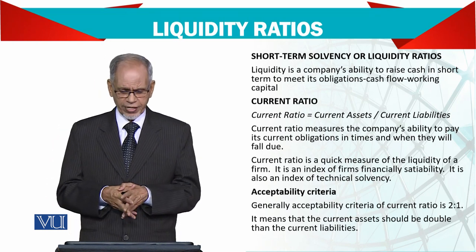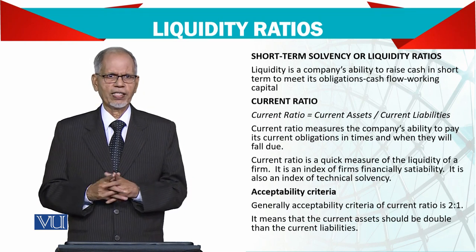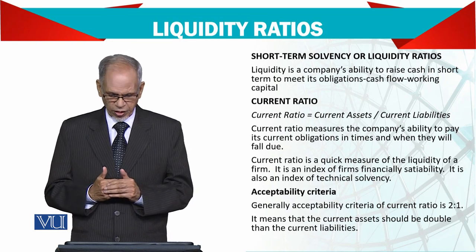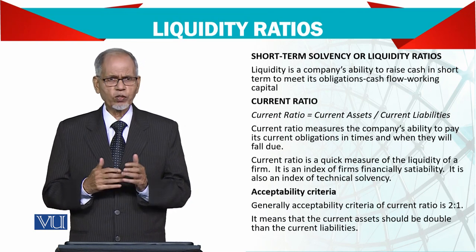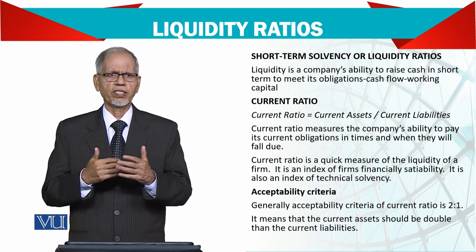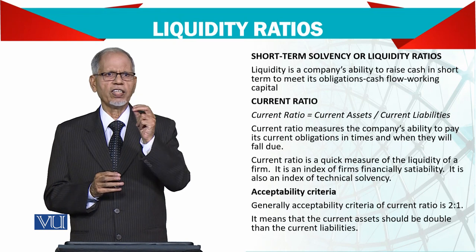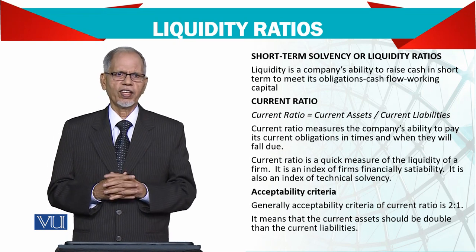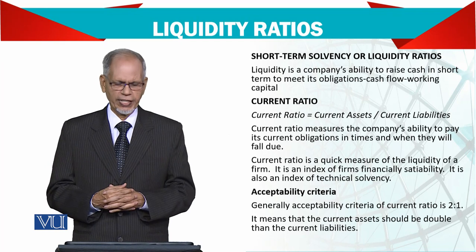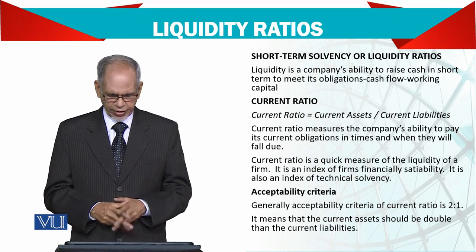The general acceptability criteria is 2:1 — current assets should be double the current liabilities. That is why it is also called the banker's ratio. If you go to a bank and want to arrange funds, the very first thing they will check is your current ratio — whether you will be able to pay installments regularly or not. It means current assets should be double the current liabilities.